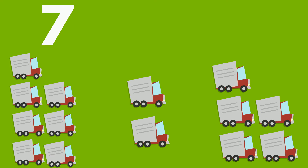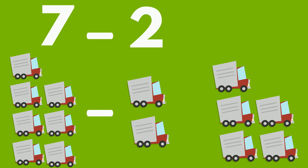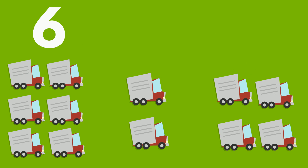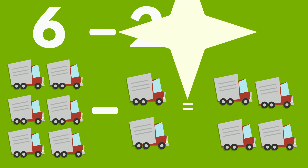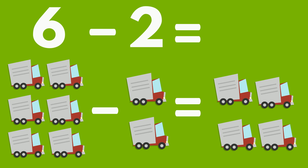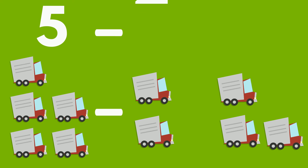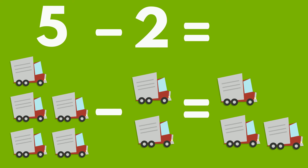7 trucks minus 2 trucks equals 5 trucks. 6 trucks minus 2 trucks equals 4 trucks. Five trucks minus two trucks equals three trucks.